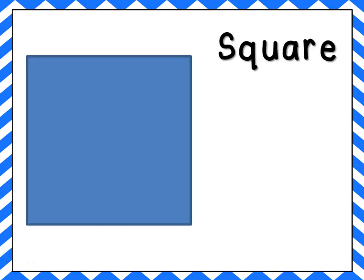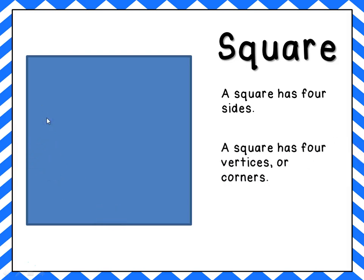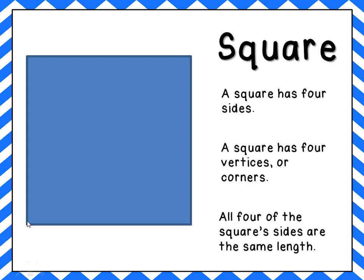This is a square. A square has four sides: one, two, three, four. A square also has four vertices or corners — there's one here, two, three, four. And all four of the square's sides are the same length.